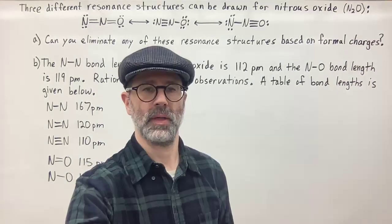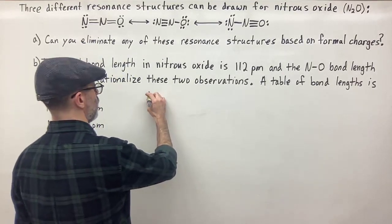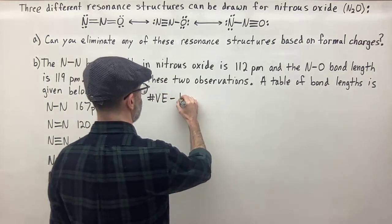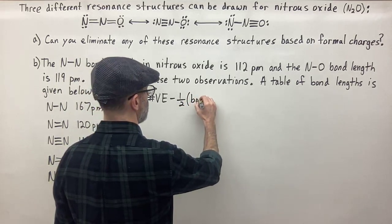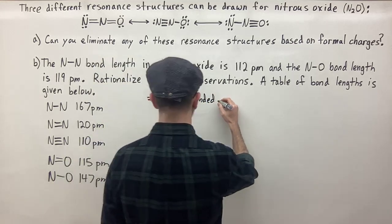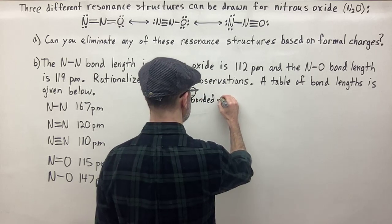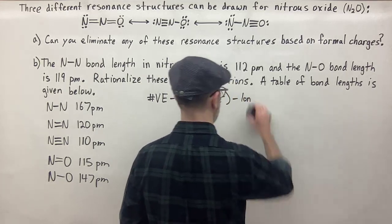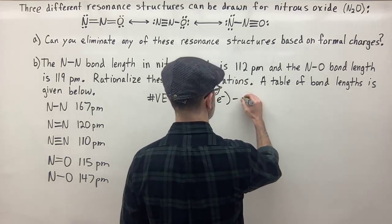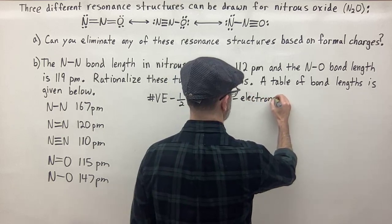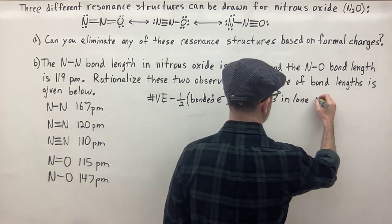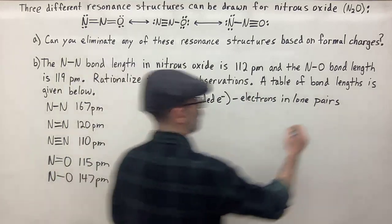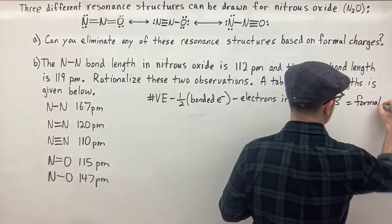The way you calculate formal charge is you compare the number of electrons that the atom would have based on the valence electrons and then divvy up the electrons based on what it is in the molecule itself, then compare. The formula is: number of valence electrons minus one-half of the bonded electrons, minus electrons in lone pairs. That gives us the formal charge.